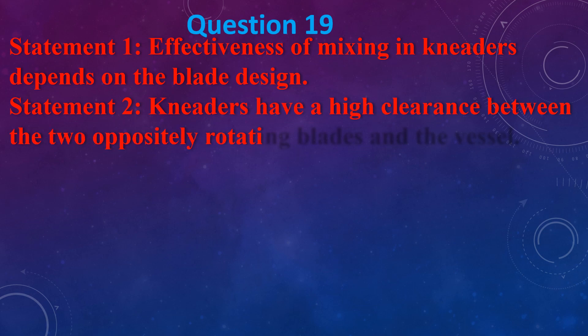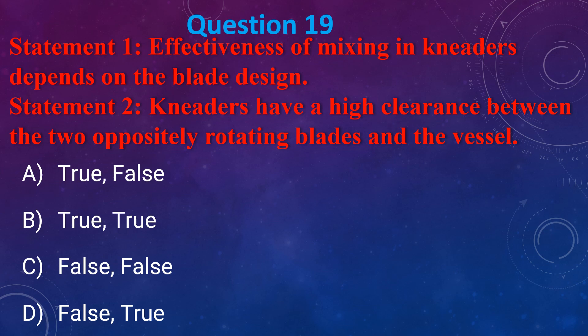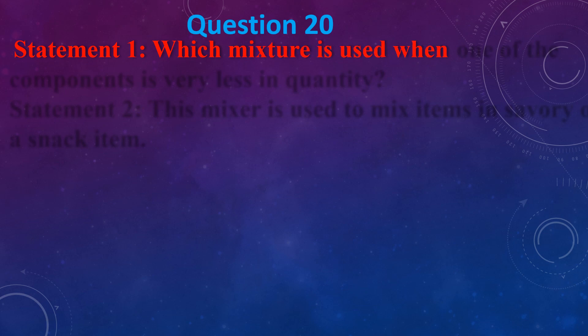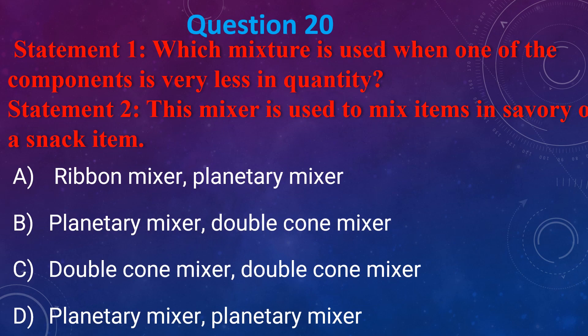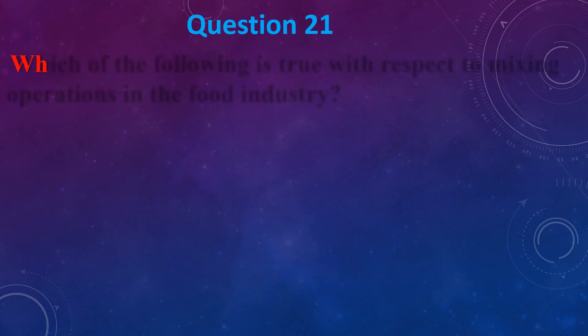Statement 1: The effectiveness of mixing in a kneader depends on blade design. Statement 2: There is high clearance between two opposite rotating blades or vessel. The answer is (b) both statements are true. Which mixer is used when one of the following components is very less in quantity? This mixer is used to mix items in a series — (a) Ribbon mixer, (b) Planetary mixer and bubble cone mixer, (c) Double cone mixer, (d) Planetary mixer and planetary mixer. The answer is (d).